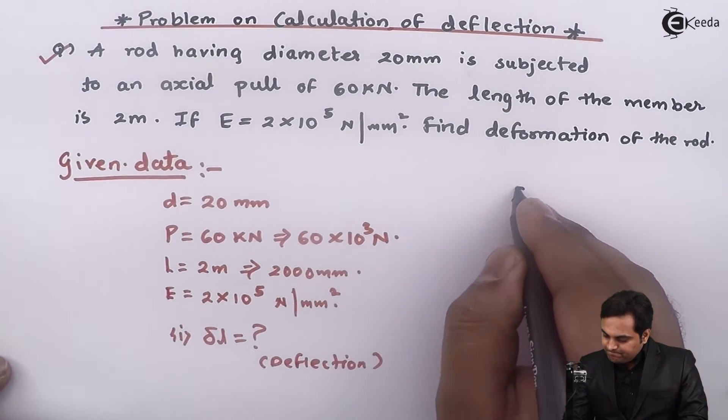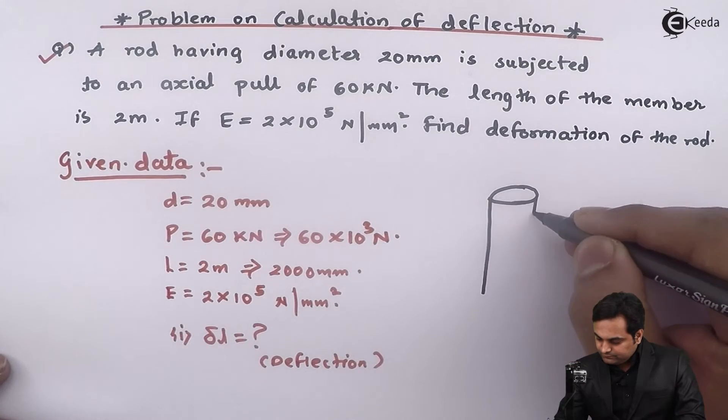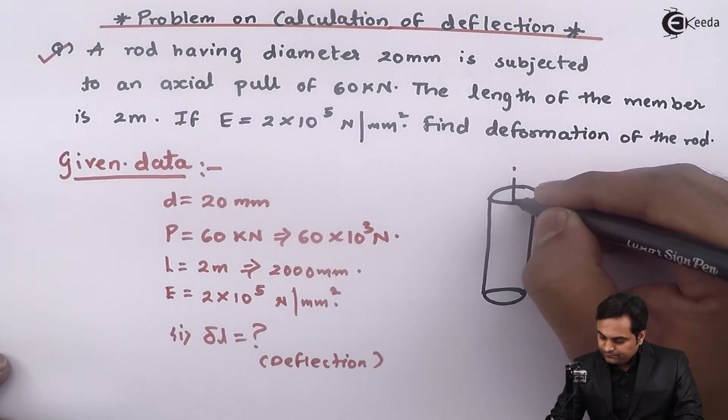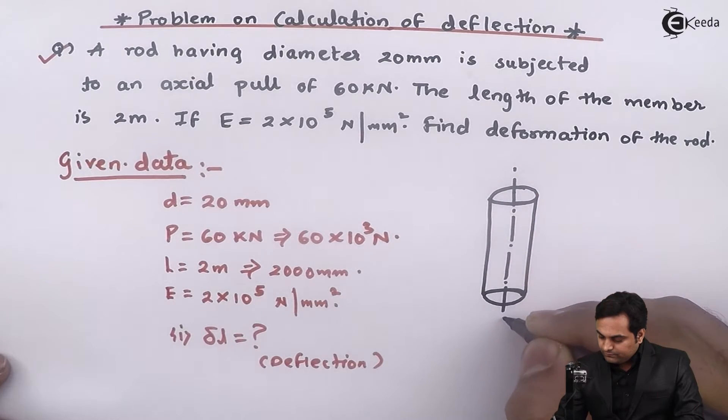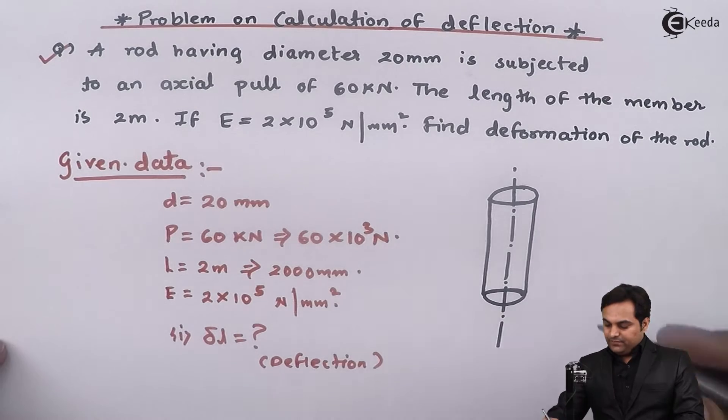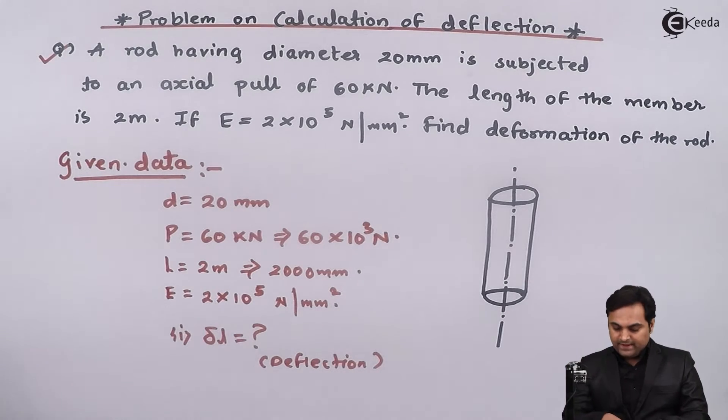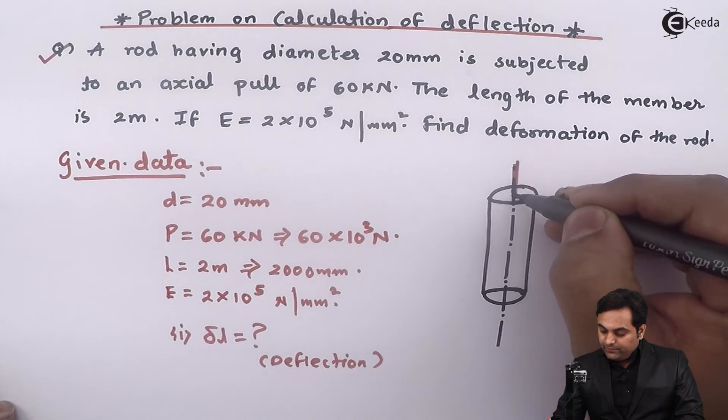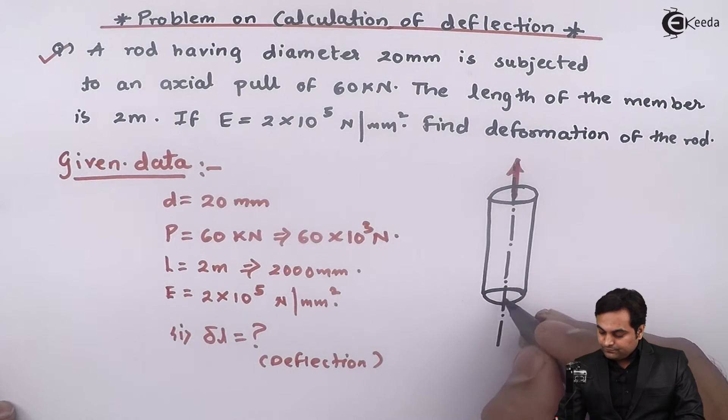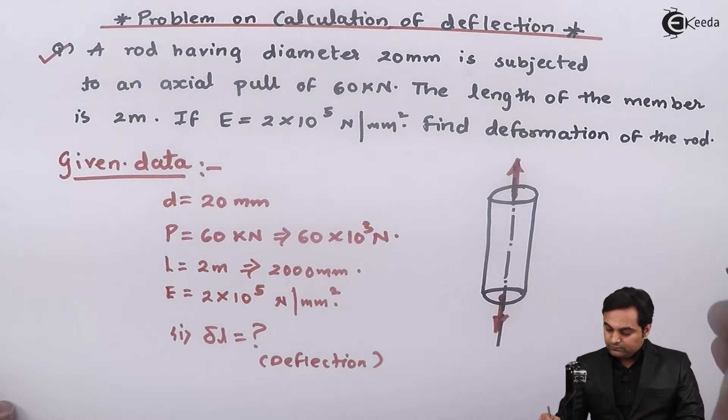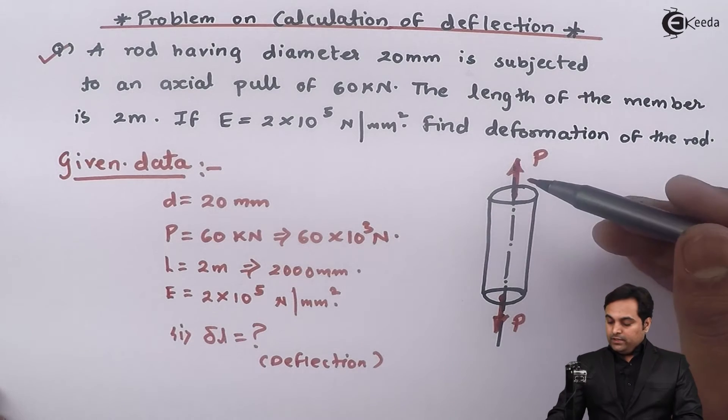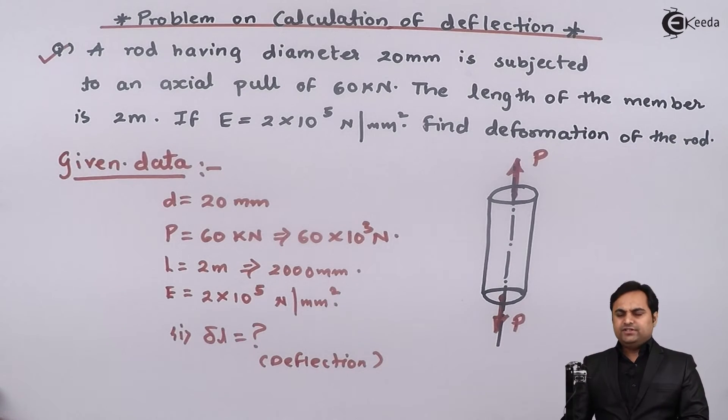Now in this question, first I'll draw the diagram. Now here we have a rod. Then this is the axis of the rod. Next, it is subjected to axial pull of 60 kilonewton, so this rod is being pulled by applying load.